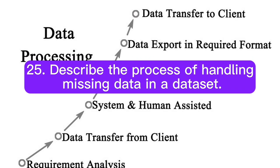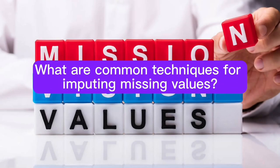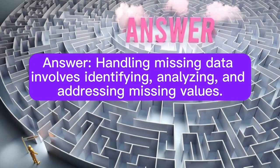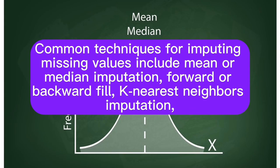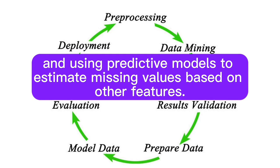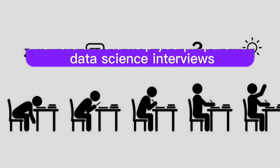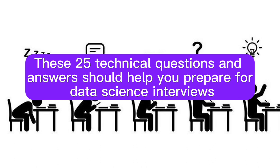Question 25: Describe the process of handling missing data in a dataset. What are common techniques for imputing missing values? Answer: Handling missing data involves identifying, analyzing, and addressing missing values. Common techniques for imputing missing values include mean or median imputation, forward or backward fill, k-nearest neighbors imputation, and using predictive models to estimate missing values based on other features.